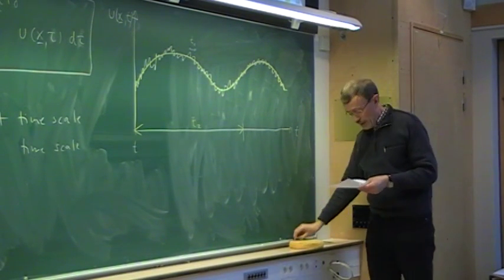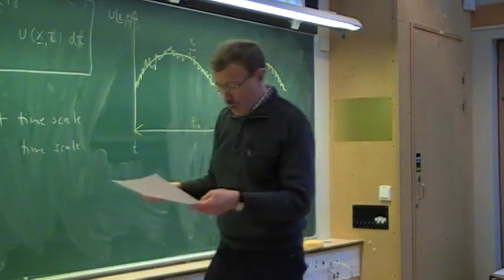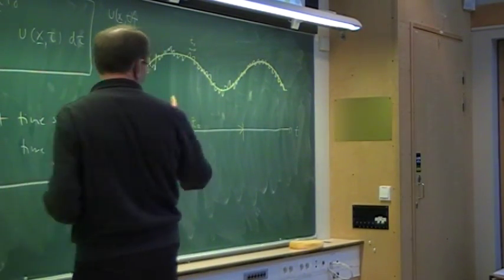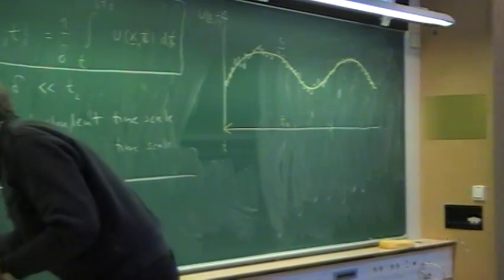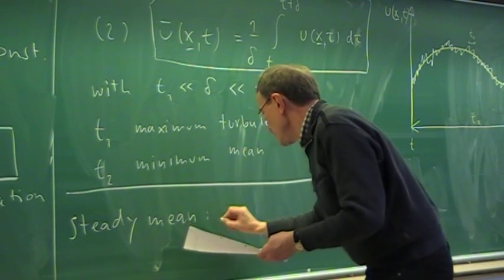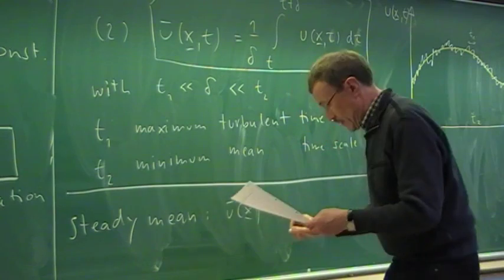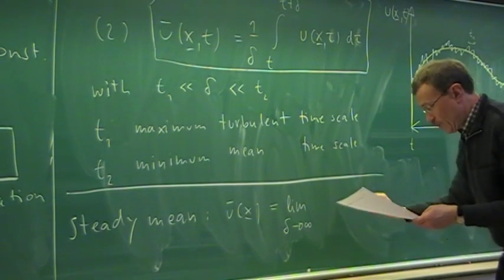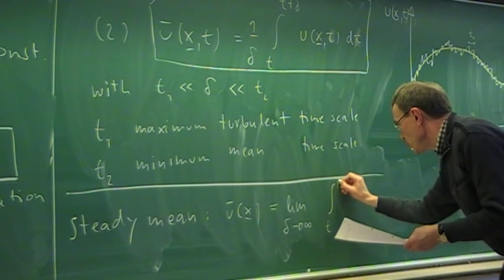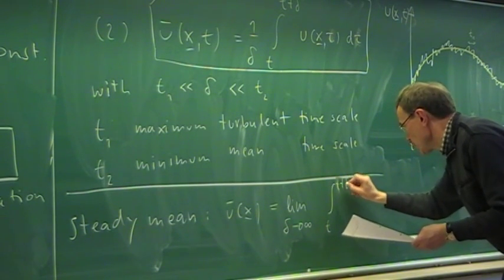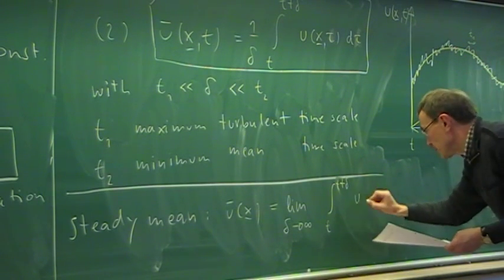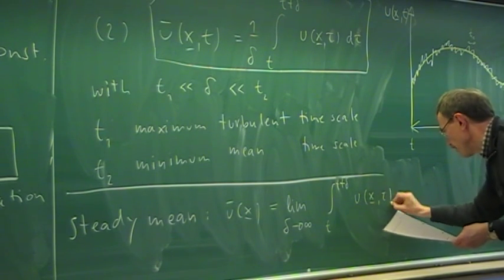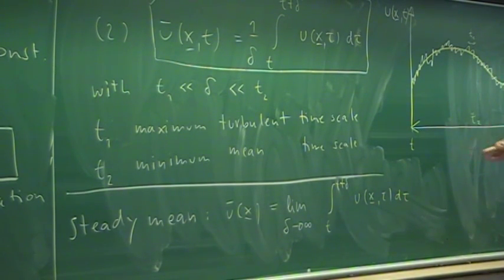For a steady mean flow, it is simpler: the mean depends only on x, and we let Δ → ∞, averaging over a long time to eliminate all time dependence. In our exercise 12, we shall have a steady mean flow.